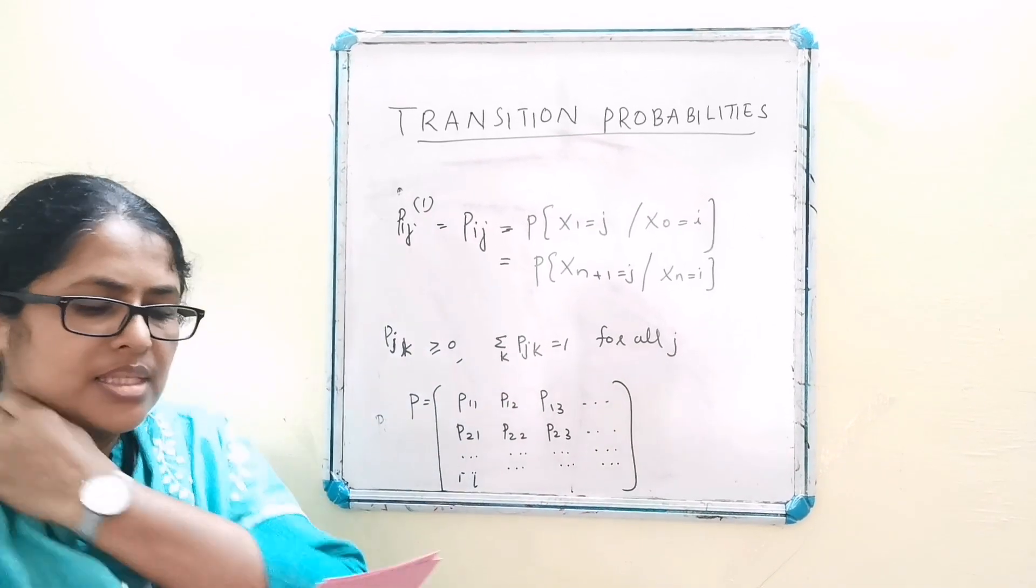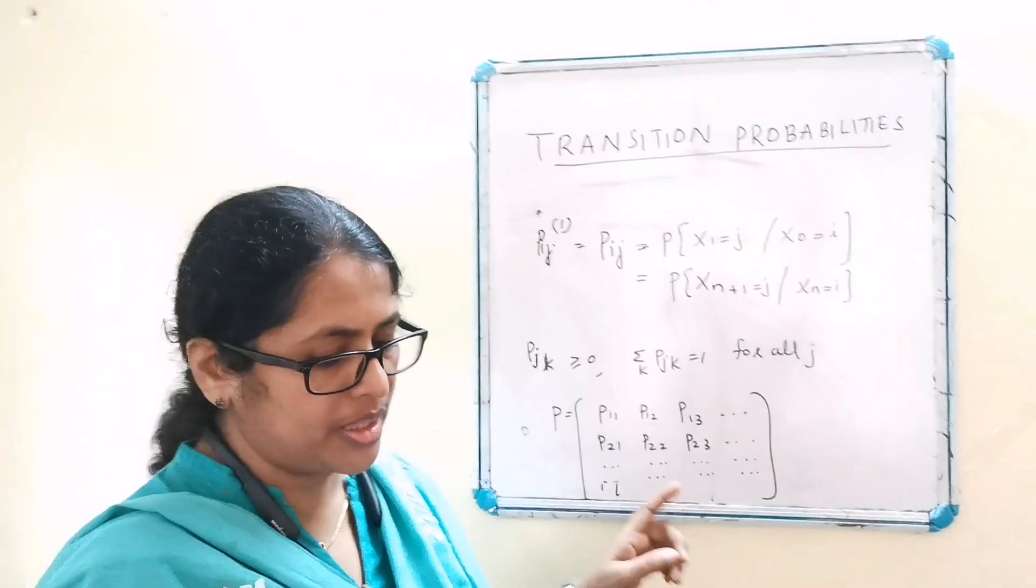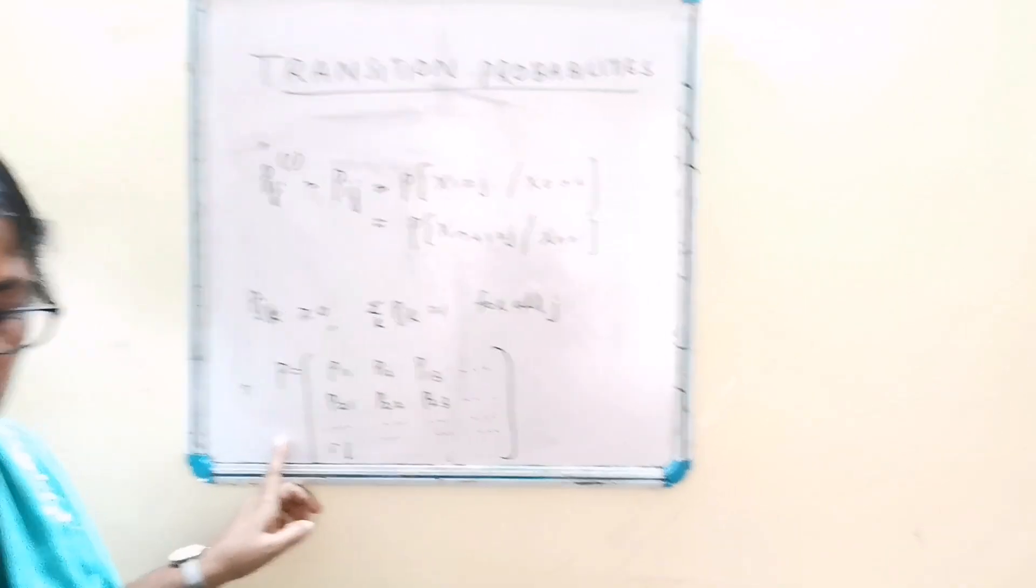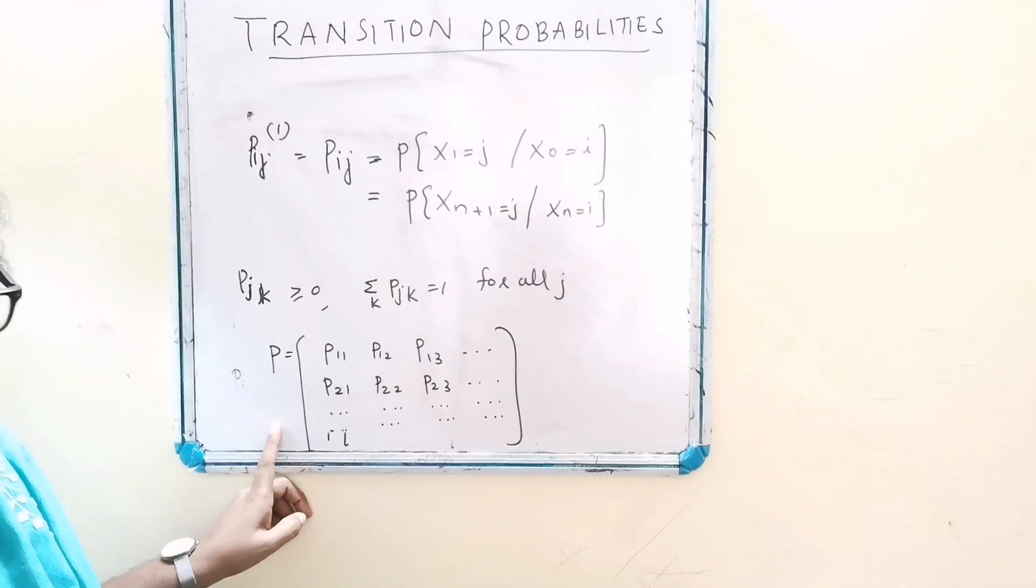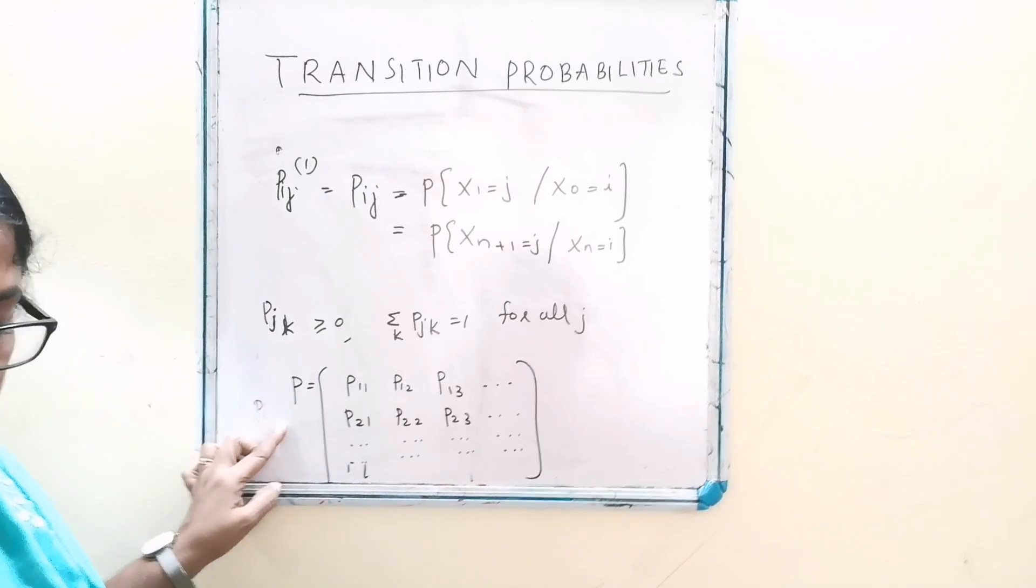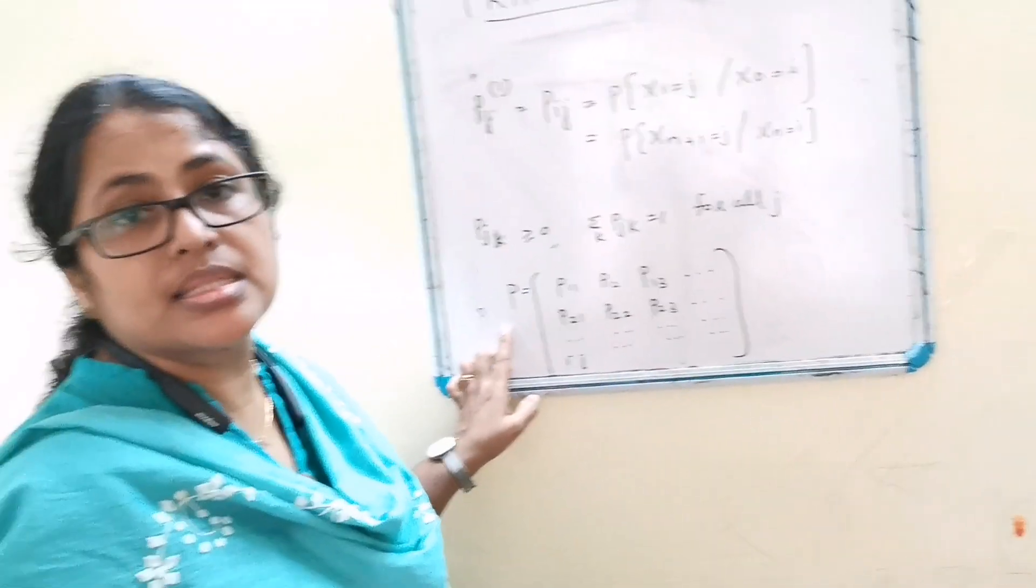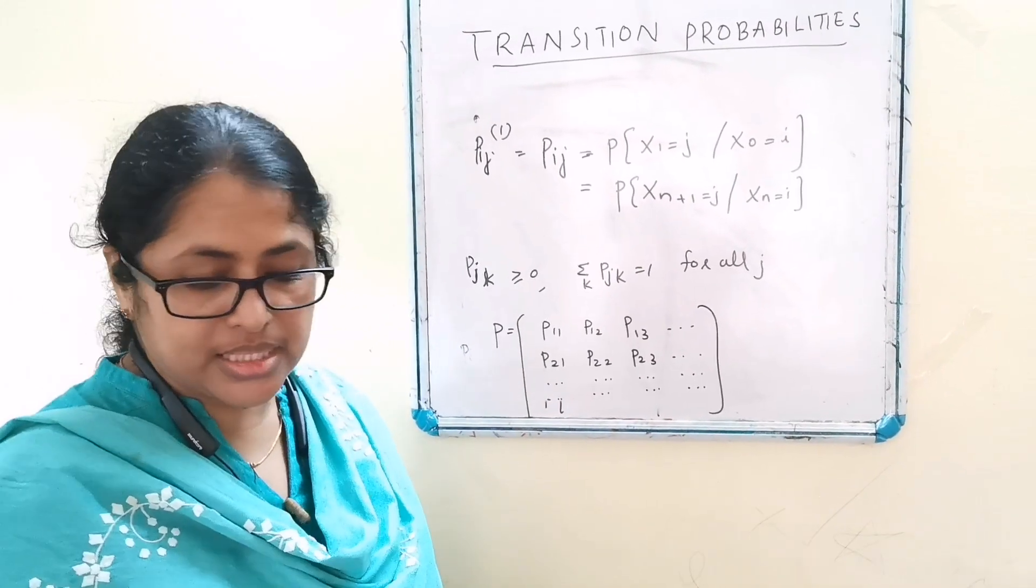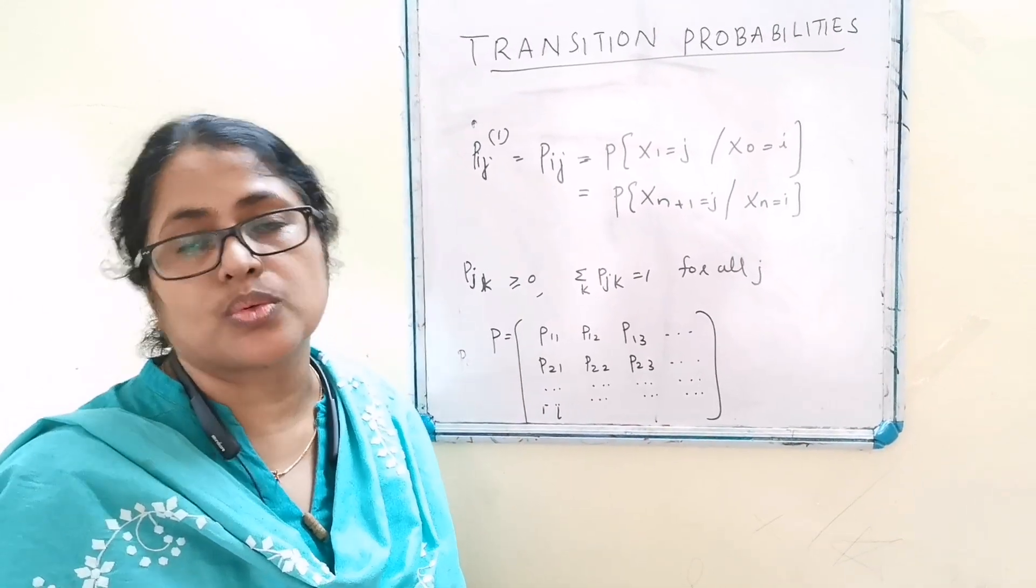This is called a transition probability matrix or matrix of transition probabilities (TPM) of the Markov chain. P is a stochastic matrix, that is, a square matrix with non-negative elements and unit row sums.